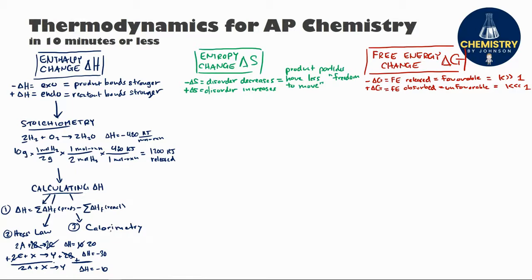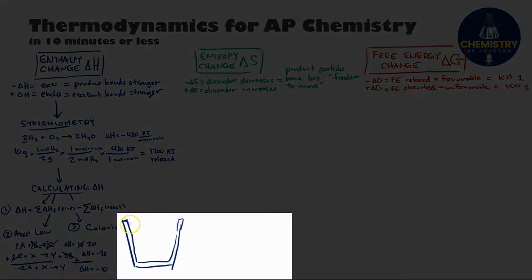Next, we have a lab-based method that is really important to AP chemistry called calorimetry. In calorimetry, at least the most common type of solution calorimetry, you take an insulated container and add some water. Inside that water, you perform some type of process or reaction that either gives off or absorbs heat.